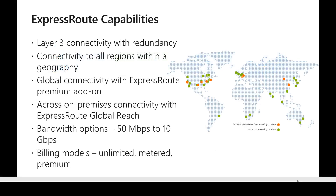Looking at different capabilities of ExpressRoute, it enables Layer 3 connectivity with highly redundant connections. Once you have set up an ExpressRoute with a particular Azure region — say a data center in New York connected to East US — you can use the same ExpressRoute to connect to any US region within the same geography. Additionally, there is a premium add-on option: if enabled, you can use the same ExpressRoute to connect to any Azure region all over the globe.